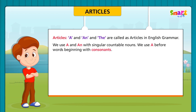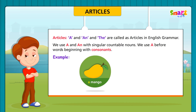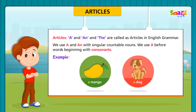We use A and AN with singular countable nouns. We use A before words beginning with consonants. For example, a mango, a dog.